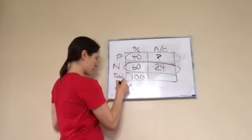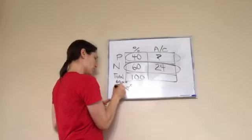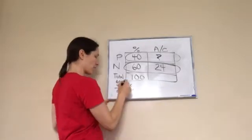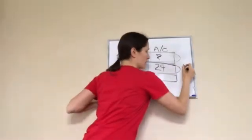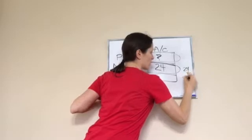24 times 40. Let's see what that is. 24 times 40 is 960.